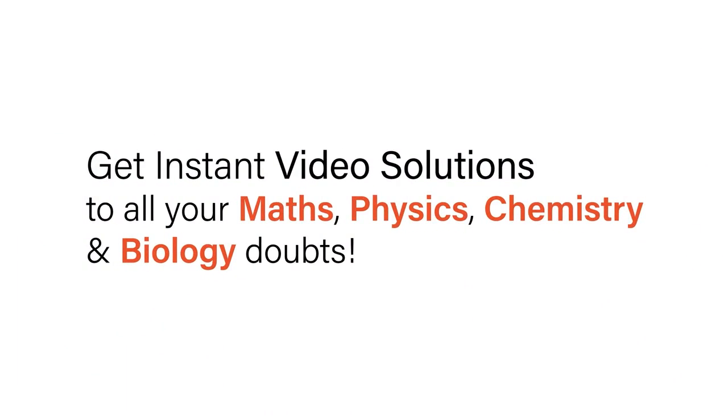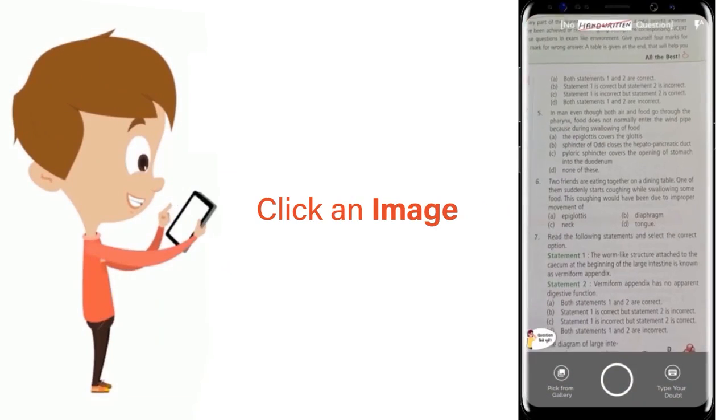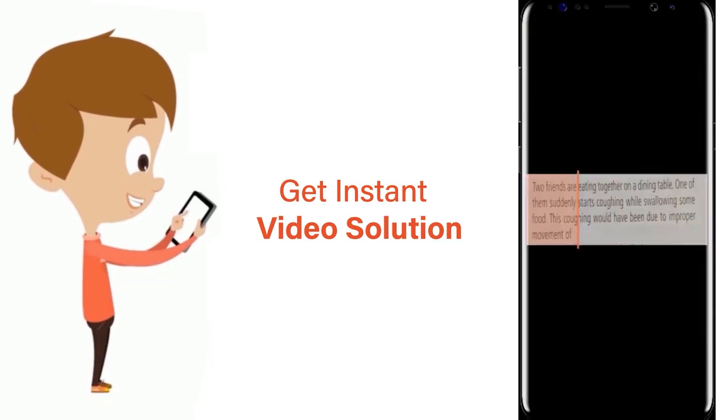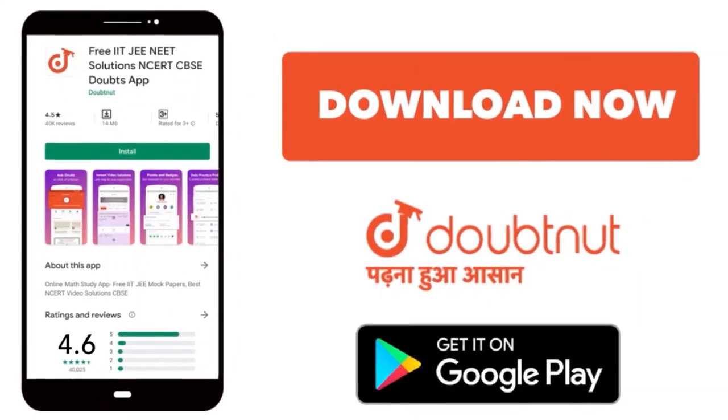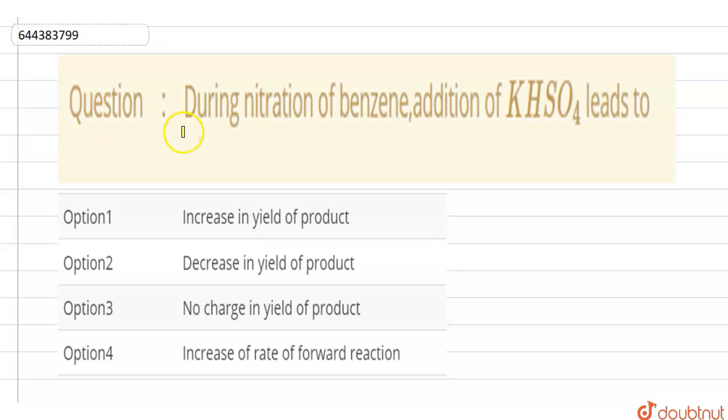With Doubtnet, get instant video solutions to all your math, physics, chemistry, and biology doubts. Just click the image of the question, crop the question, and get instant video solution. Download Doubtnet app today. Hello students, the question is: during the nitration of benzene, addition of KHSO4 leads to...